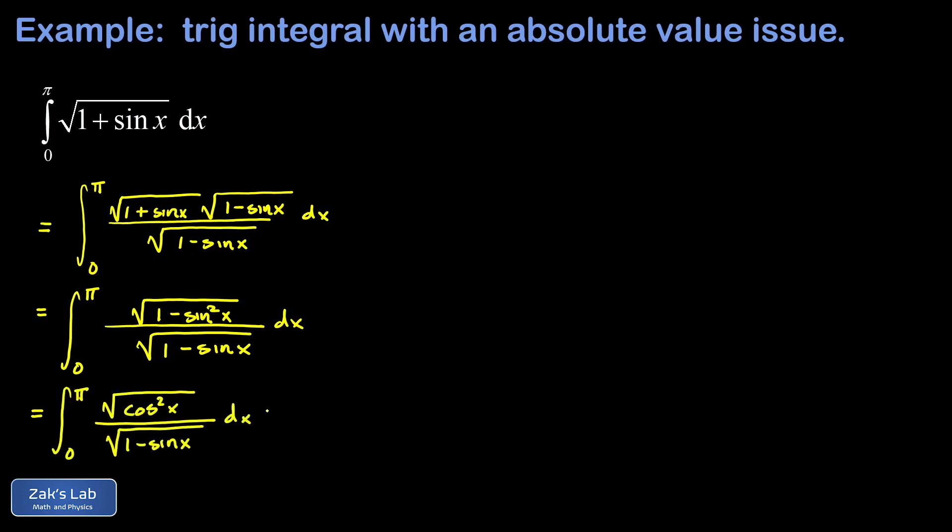This is probably the hardest point about this whole approach to the integral. You can't just say that the square root of cosine squared x is just cosine of x.